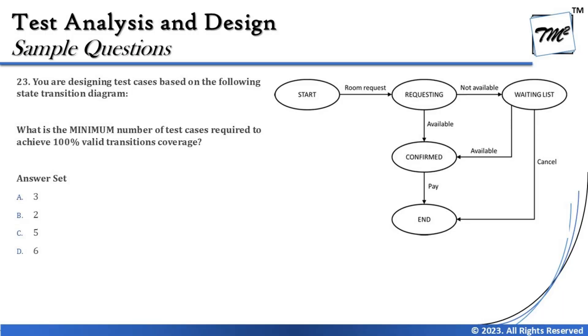The options are 3, 2, 5, and 6. The right answer is 3: three test cases are required. Path one — start, request, confirmed, end. Path two — start, request, waiting list, confirmed, end. Path three — start, request, waiting list, cancelled, end. These are the three possible paths. Sometimes it is just simple — don't complicate things that don't need to be. But your concepts must be clear, otherwise you'll go wrong.